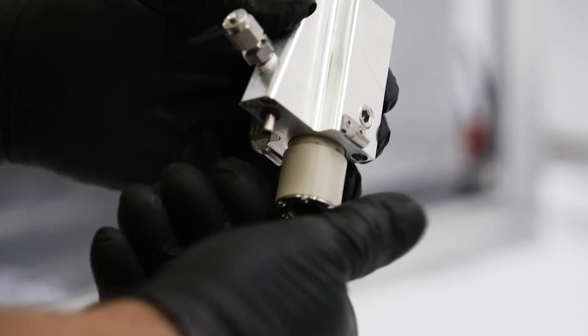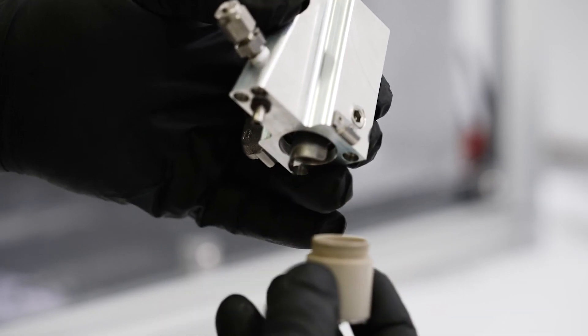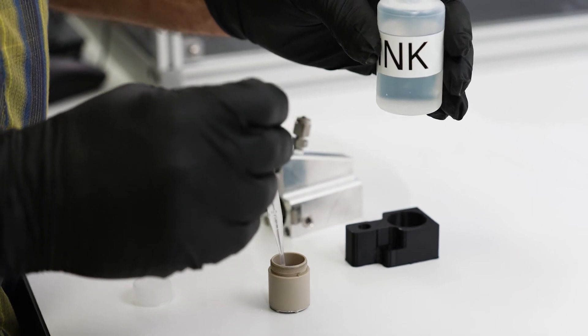19. Next, unscrew the ink vial from the bottom of the ink cartridge and place the vial on a flat, stable surface. Fill the ink vial with 1 to 3 milliliters of ink.